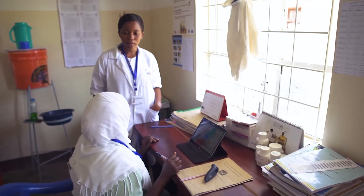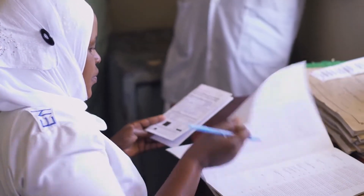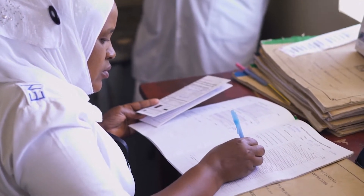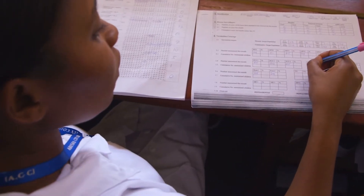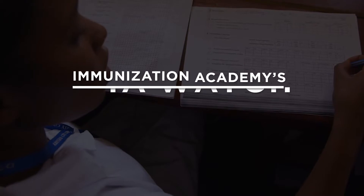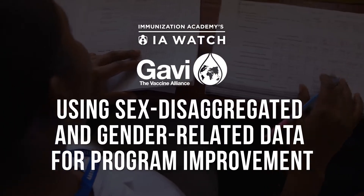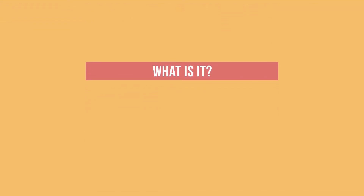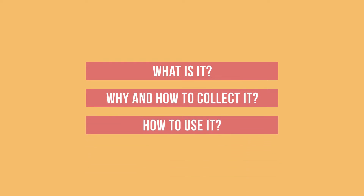You use data every day to monitor the performance of your immunisation programme. Data helps you identify coverage problems and prioritise solutions in order to reach all children with the life-saving vaccines they need. But are you collecting and using gender data? In this video, we will discuss what sex disaggregated and gender-related data are, why and how to collect this data, and how to use it for programme improvement.